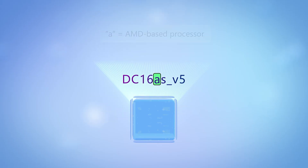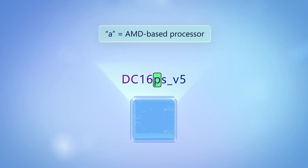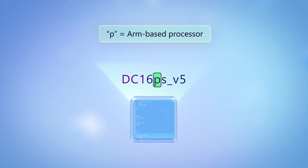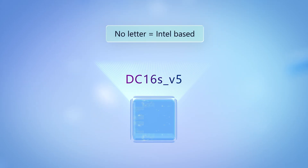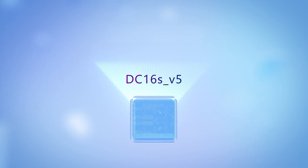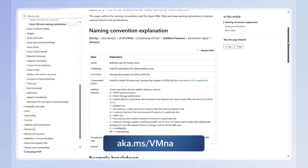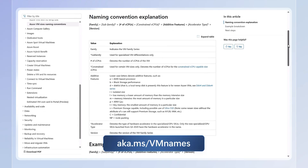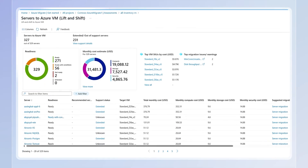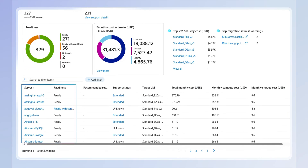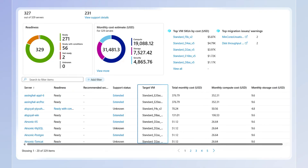Importantly, an A signifies AMD-based processors, and P signifies that the VM is powered by ARM-based processors. If you don't see an A or a P, the underlying processor is Intel-based. A set of lowercase letters represent additive features — for example, S for premium storage. To learn more, you can refer to aka.ms/VMnames, and you can leverage free tools like Azure Migrate to assess the requirements of your on-prem workloads and right-size your infrastructure on Azure.